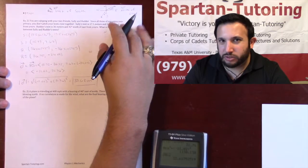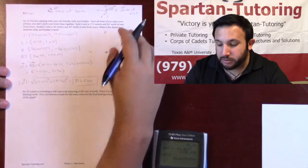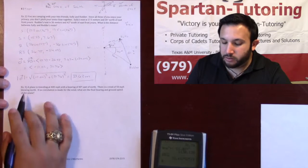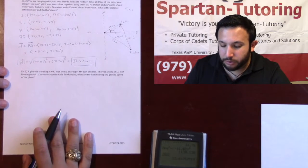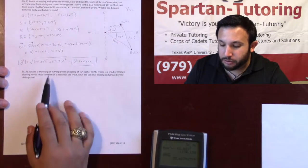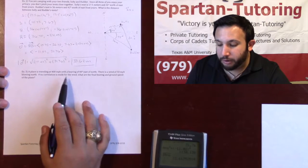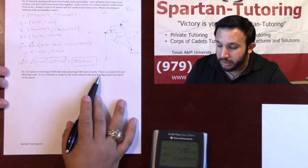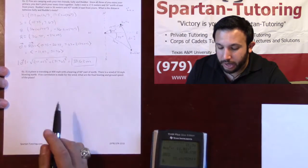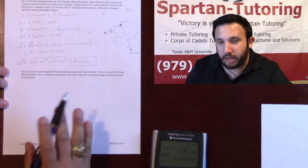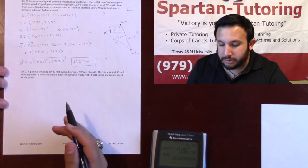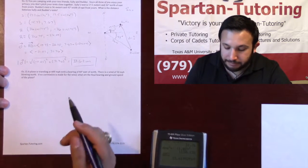Howdy, in this video we're going to wrap up our vectors lesson with the final example problem. A plane is traveling at 400 miles per hour with a bearing 40 degrees east of north. There is a wind of 50 miles per hour blowing north. If no correction is made for the wind, what are the final bearing and ground speed of the plane?